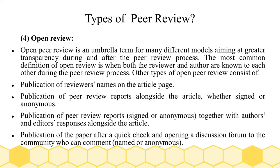The fourth type is open peer review, which is an umbrella term for many different models aiming at greater transparency during and after the peer review process. The most common definition of open review is when both the reviewers and authors are known to each other. Another type consists of publication of reviewers' names on the article's page.